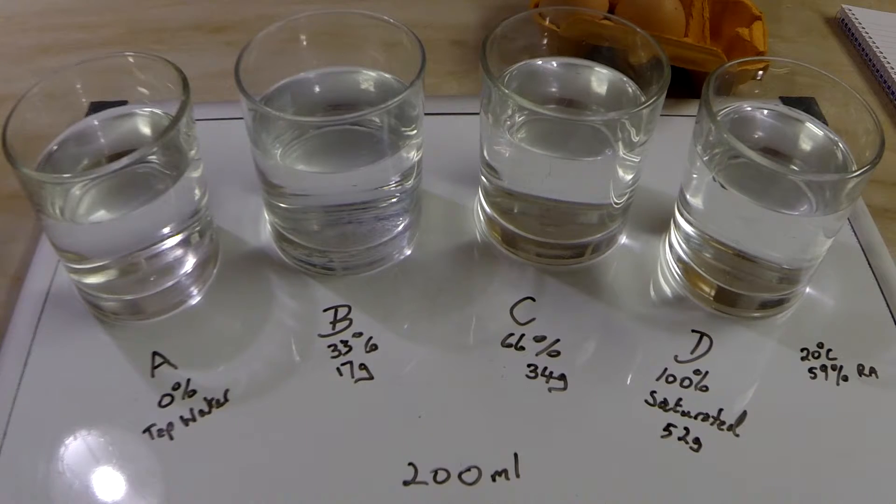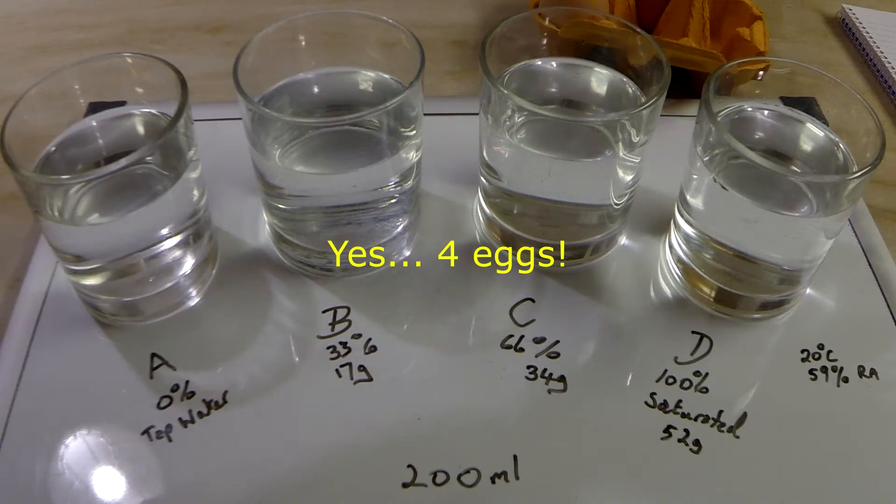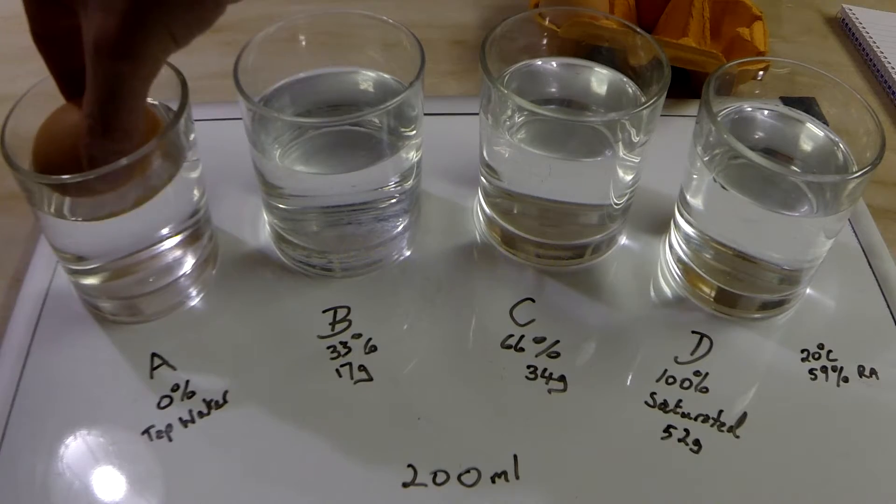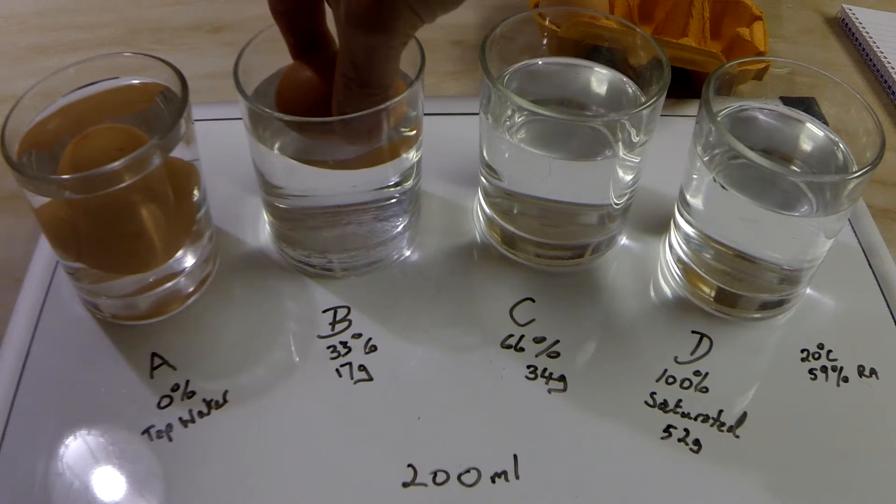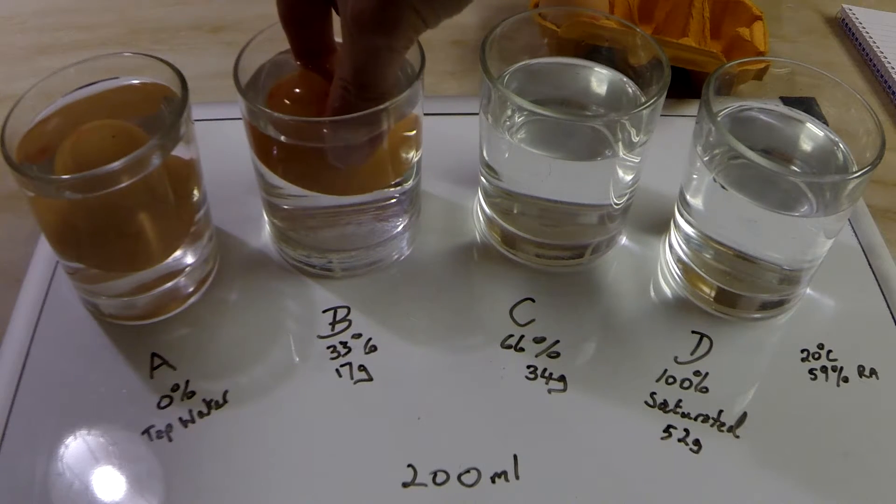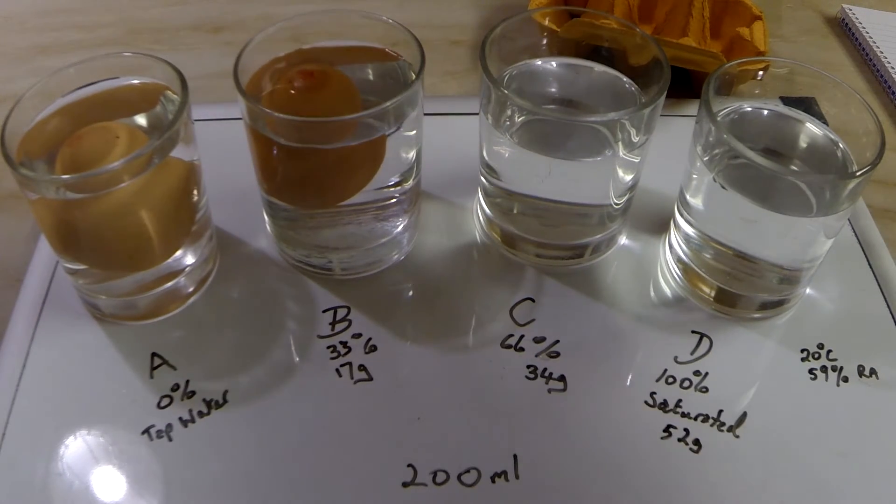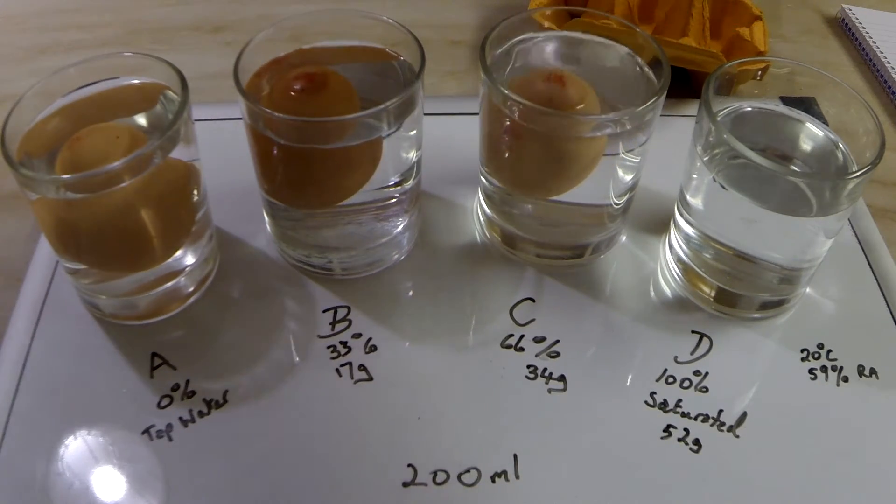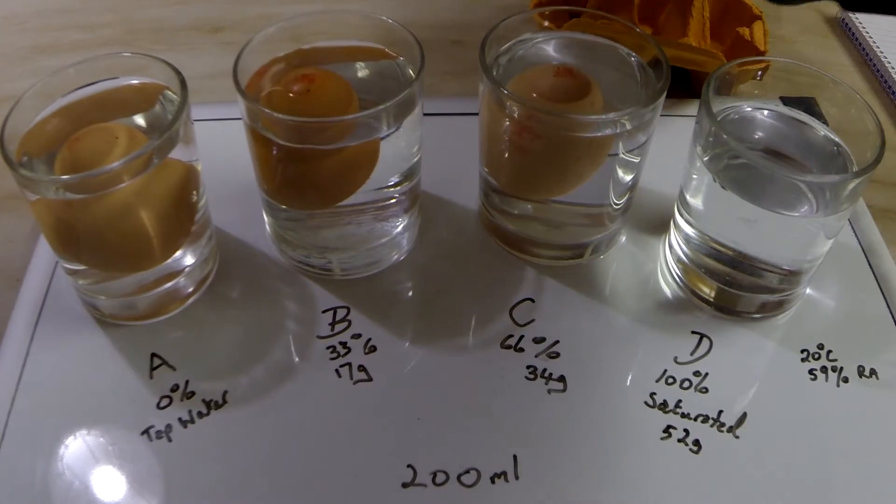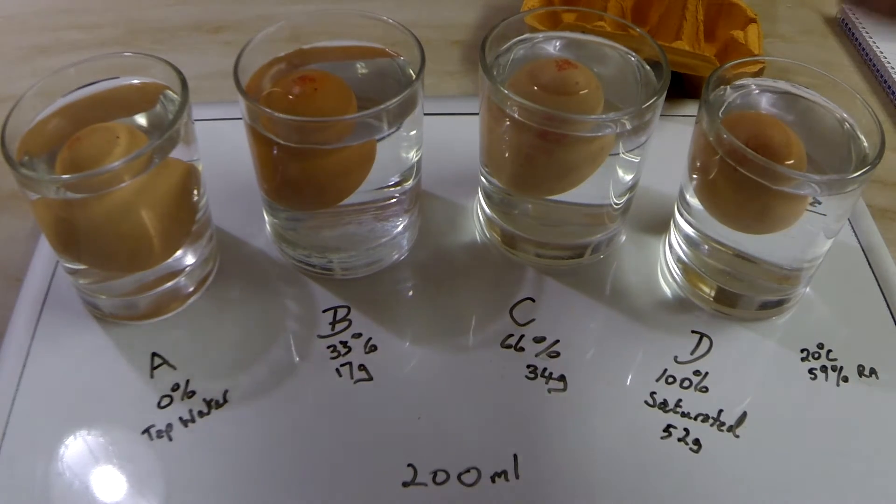So now we have to float an egg into each one and see how the eggs float. So I have three raw eggs here, so I'm being a bit careful with them. Because I do want to eat them afterwards, of course. So that's the first one gone in. That's the second one in. It's definitely floating a little bit higher. That's the third one in. And that's definitely floating even higher. And that's the fourth one in.